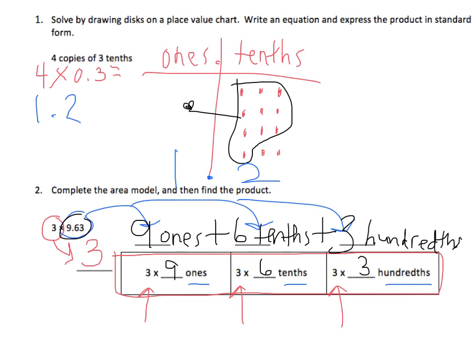So 3 times 9, underneath now I would write, is 27 ones. I'm going to add that to my second box. 3 times 6 is 18 tenths. And I'm going to add that to my last box. 3 times 3 hundredths is 9 hundredths.